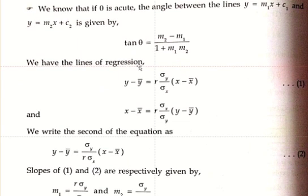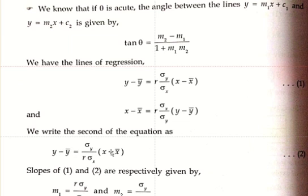Next, compare these equations with the equation of the line y equals mx plus c. Here this is y, this is m, and this is x plus c. Here c is the constant, c equals 0 in both equations. This is in the form y equals m into x plus c, where c equals 0.